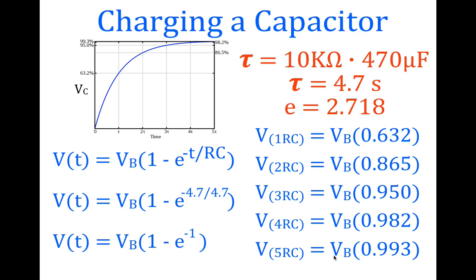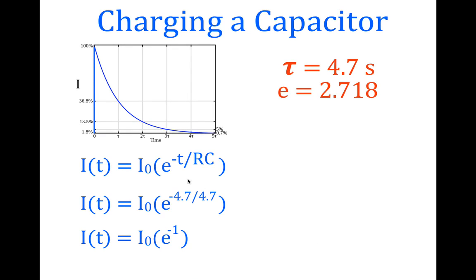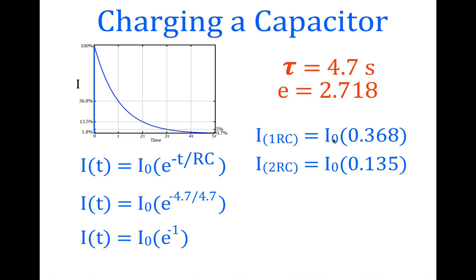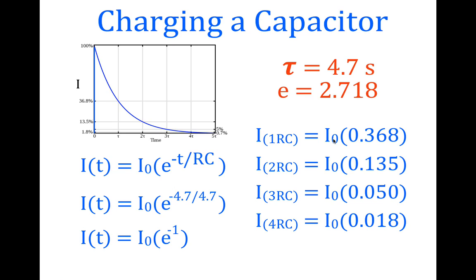We can do the same for the current, which is decreasing. With a time constant of 4.7 seconds, after one time constant we use I_max × e^(−1), giving 36.8% of the maximum. Substituting two time constants gives 13.5%, three gives 5%, four gives 1.8%, and finally when the capacitor is fully charged the current through the circuit is 0.7% of the initial maximum current. That's how the voltage and current equations work.